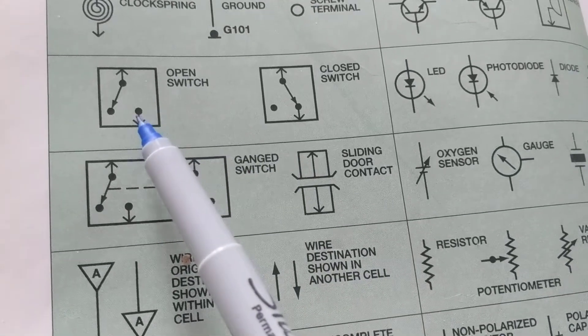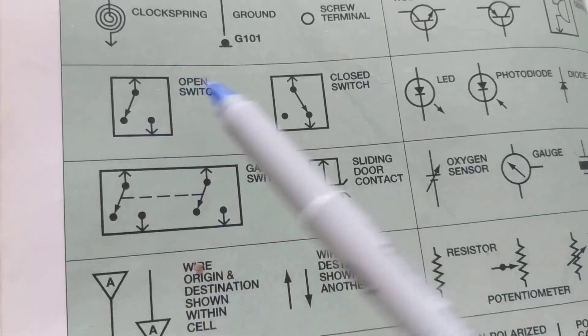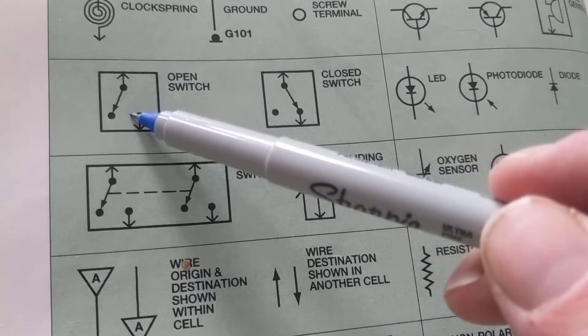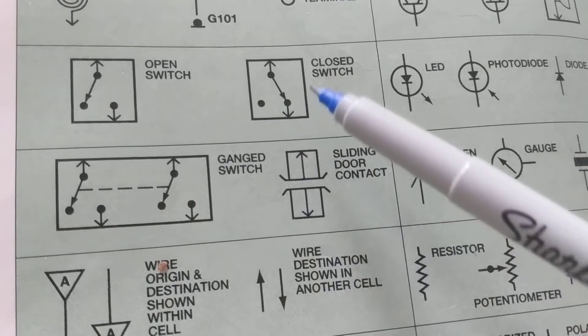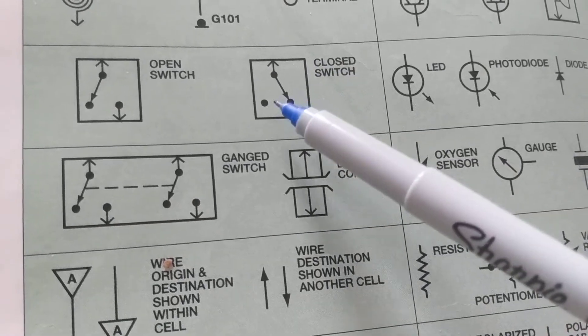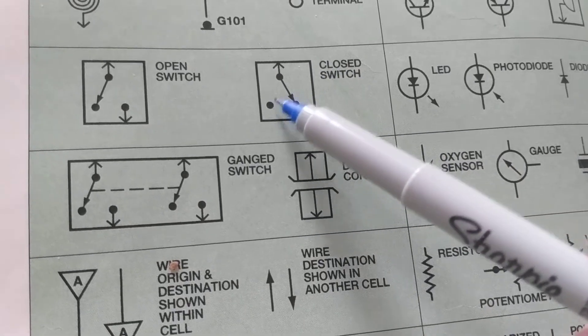Open switch is the one in rest position, means it's open. When we activate it, it'll close from here to here. This one is closed, and when we activate it, it'll open.